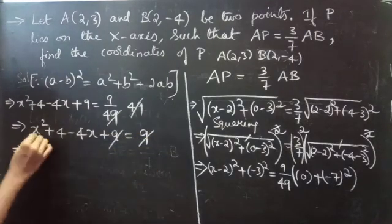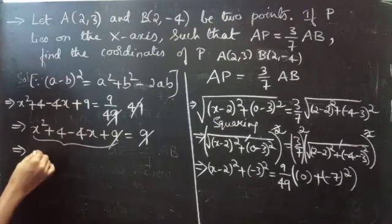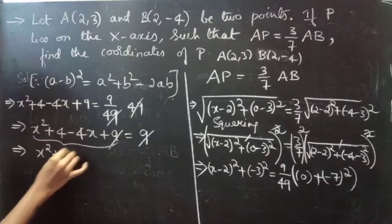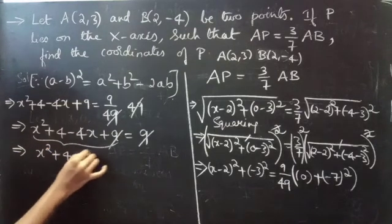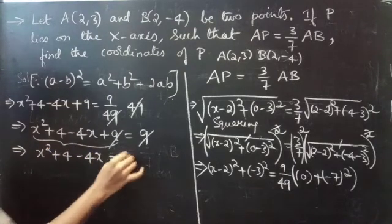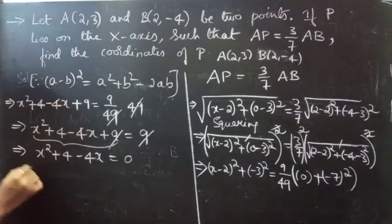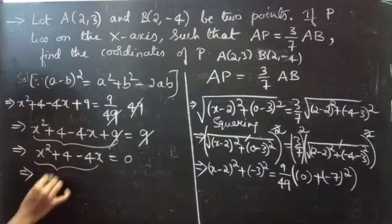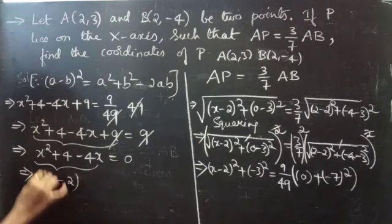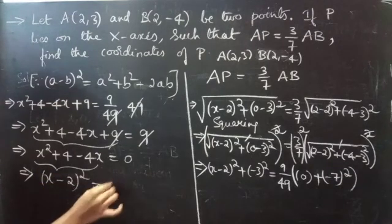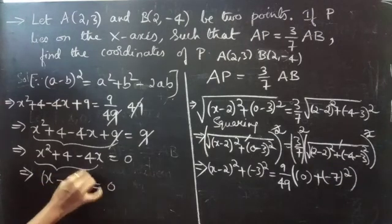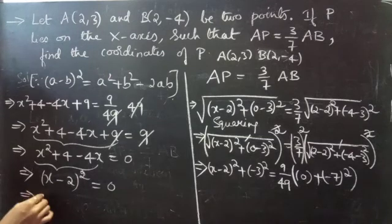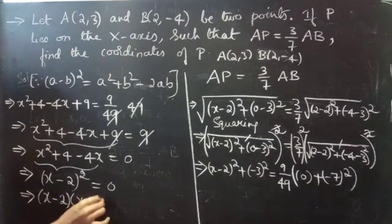So we can write it as x squared plus 4 minus 4x equals 0, which is (x minus 2) squared equals 0. We can write this as (x minus 2)(x minus 2) equals 0.